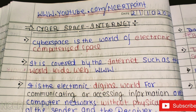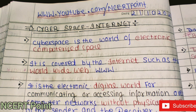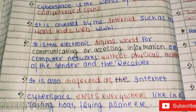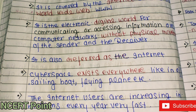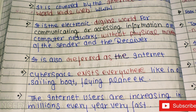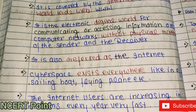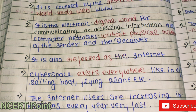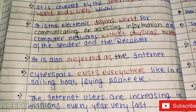Cyberspace is the world's electronic computerized space. It is covered by the internet — the worldwide web. It is the electronic digital world for communicating or accessing information over computer networks without physical movement of the sender or receiver. Cyberspace exists everywhere: in offices, railway stations, sailing ships, flying planes, and even on phones. The number of internet users is increasing by millions every year, and more than a thousand million people in over a hundred countries use the internet.